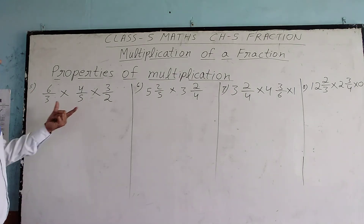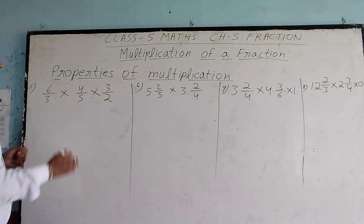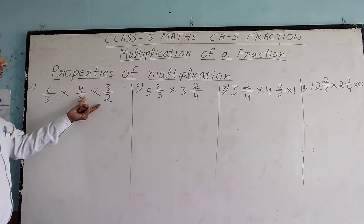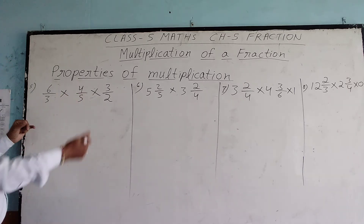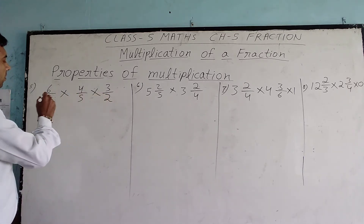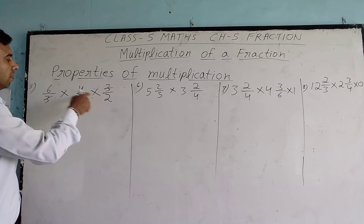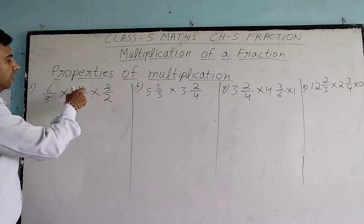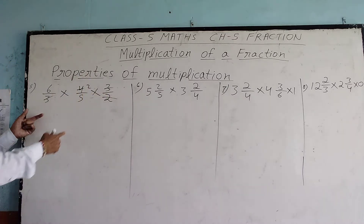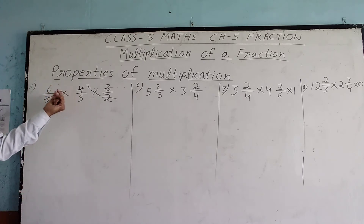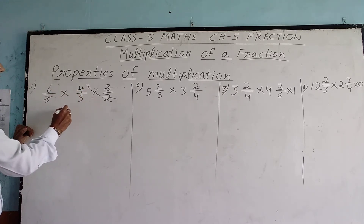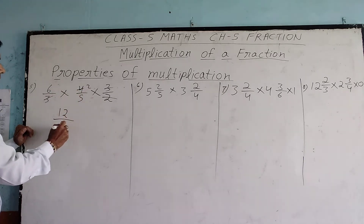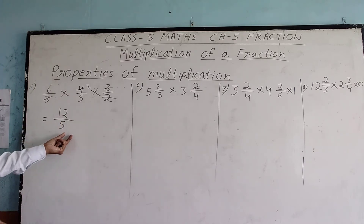Question number 5: here three fractions are multiplied. First we check if we can cut and reduce the fractions. We can cut this 3, and we can cut 4 by this 2 — 2 goes into 4 twice. Now we cannot cut further, so we multiply numerator by numerator and denominator by denominator: 6 multiplied by 2 gives 12, and the denominator is 5. So the product is 12 by 5.